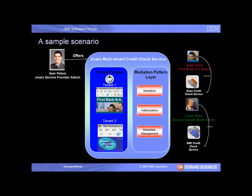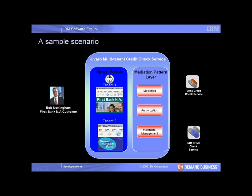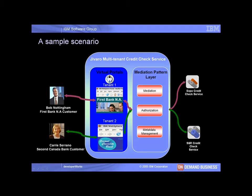he'd like to specify a routing rule in the mediation pattern layer. After specifying this rule, Bob Nottingham, a First Bank customer, will have his request routed to the Expo service provider, and Carrie Serrano, a Second Bank customer, will have her request routed to the SNR service provider.